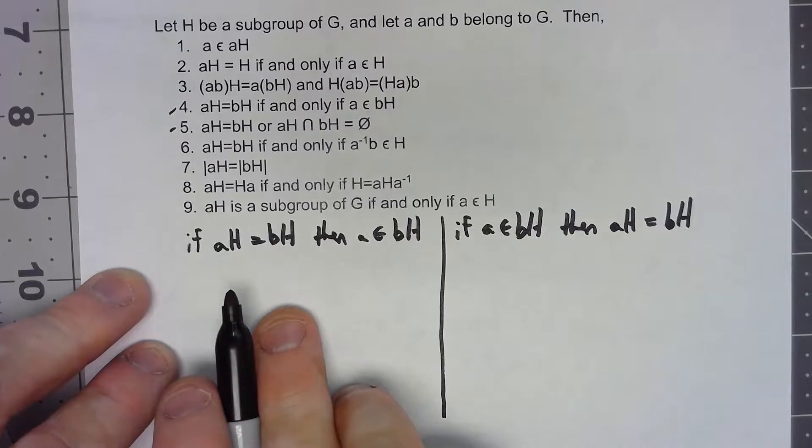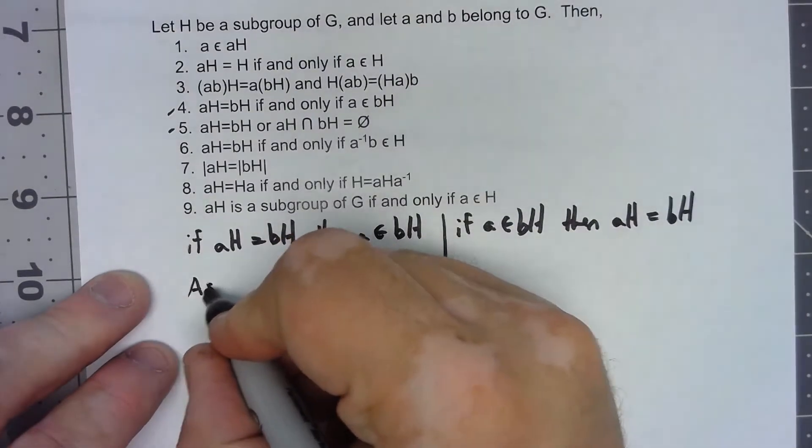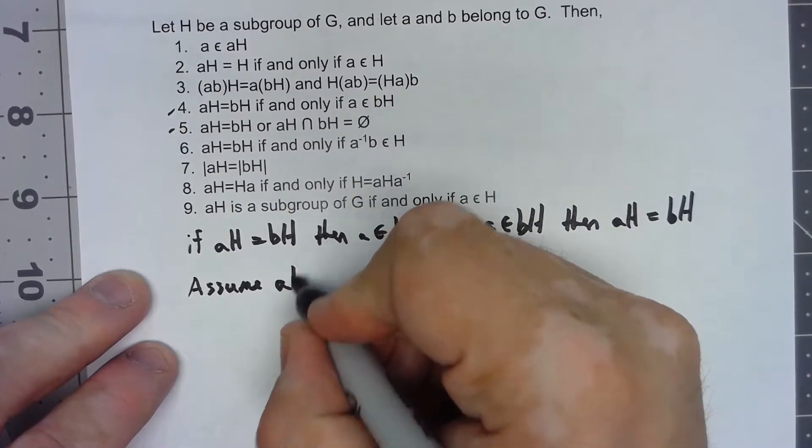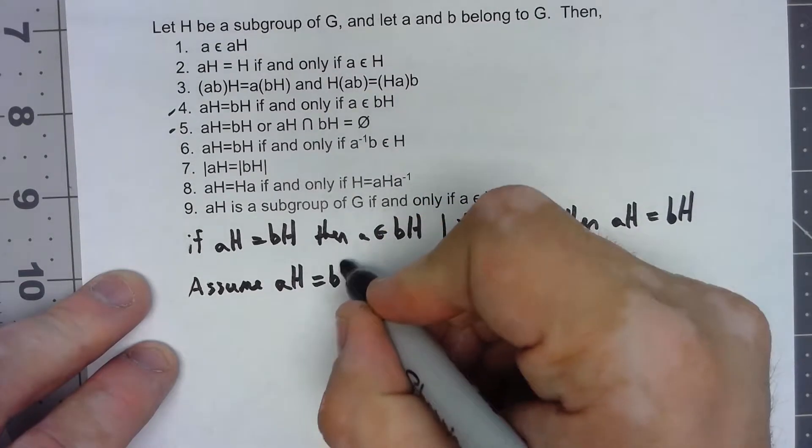Let's start with this one. So we assume AH is equal to BH.